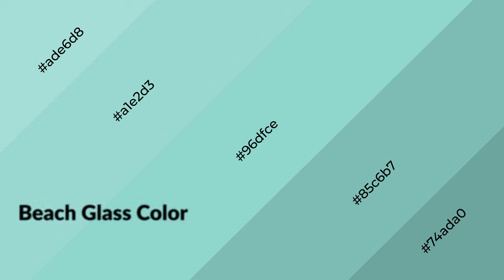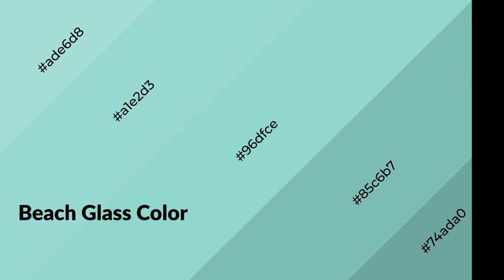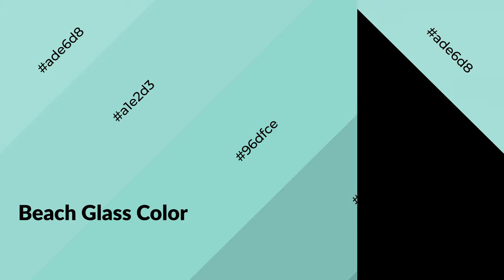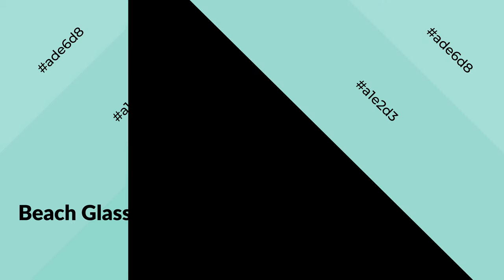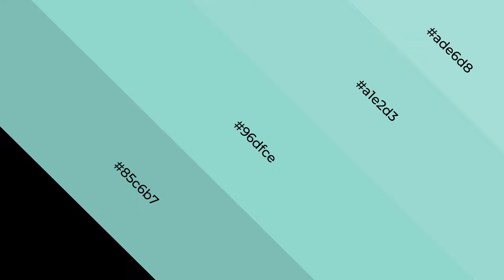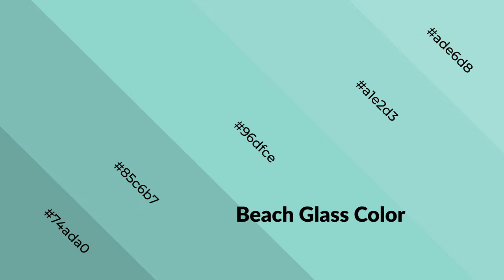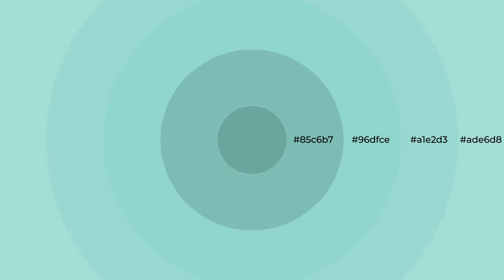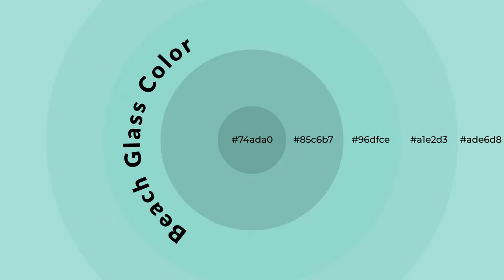Beach glass is a cool color and it emits calming, serene, soothing, and refreshing emotions — spacious, unwinding, peaceful, and relaxed. Cool colors are like water, ice, sky, grass, soft and snow. You can see them used in baby products.